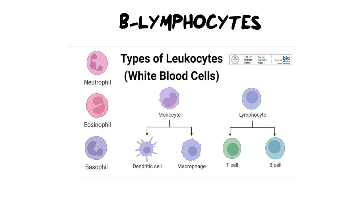Hi everybody and welcome back to Ms. Angler's biology class. I am Ms. Angler. In today's video, we are doing the second installment in our immunity series and we are going to be discussing B lymphocytes and their functions and their responsibility in the active response to infections. In our previous video, we covered T lymphocytes — I'm going to link that at the top right now if you need to watch that first, because I'm going to reference those cells as well. Today we are going to look at B lymphocytes and their response to specific antigens and pathogens that affect the body.